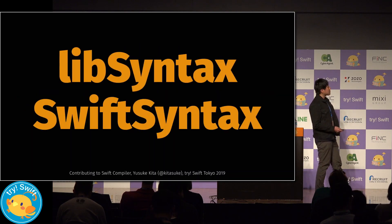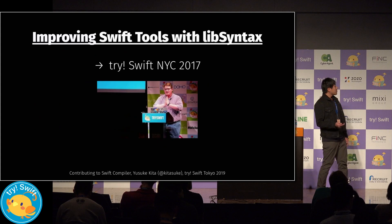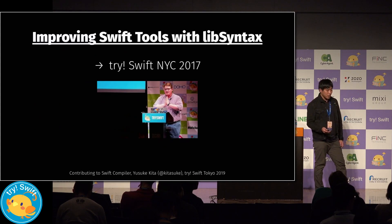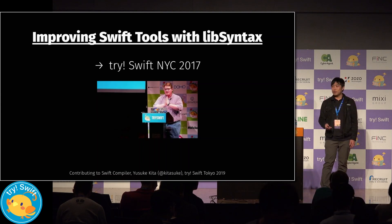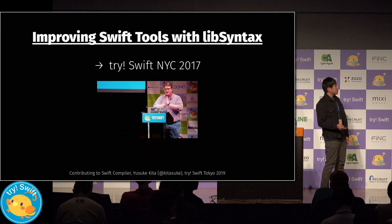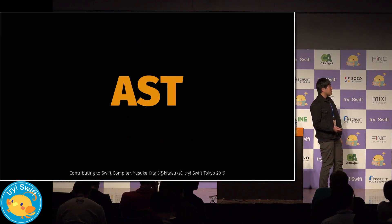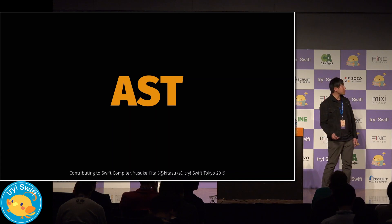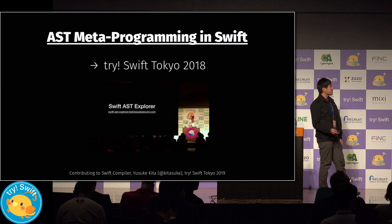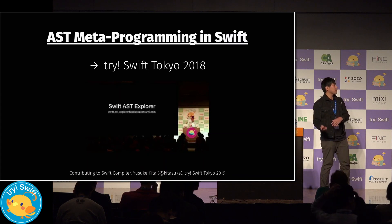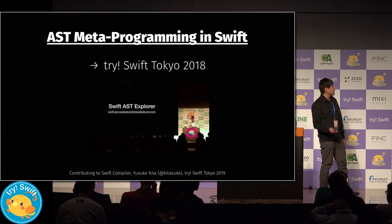First, lib syntax or Swift syntax. This talk, 'Improving Swift Tools with lib syntax,' was given by Hadam. It's all about how the lexer works in the compiler, and you can get some ideas to build tools using AST, like static analysis tools using Swift syntax. Next, AST — abstract syntax tree. This talk, 'AST Metaprogramming in Swift,' was given by Katsumi. It's all about how the parser works in the compiler, and you can get some different ideas to write any tools using AST.